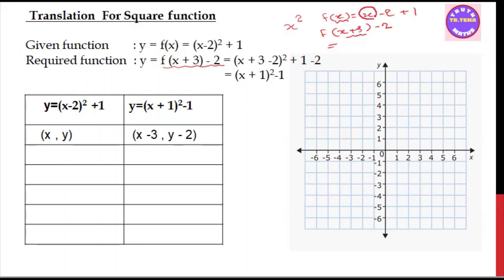So if we have x plus 3, then x plus 3 minus 2, giving us x plus 3 minus 2 plus 1. We now have the whole square: (x plus 3 minus 2) whole square. Then we have plus 1, so it becomes (x + 1) whole square plus 1.